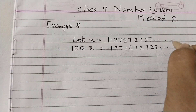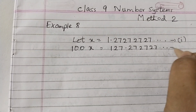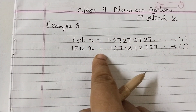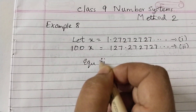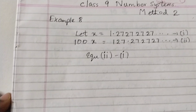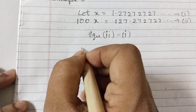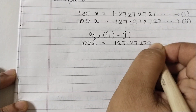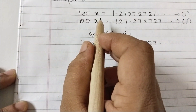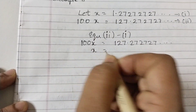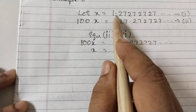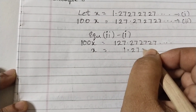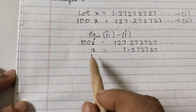Label the first equation as equation one and the second as equation two. Now subtract equation one from equation two. Equation two is 100x = 127.2727..., and below it, aligned at the decimal point, x = 1.2727...